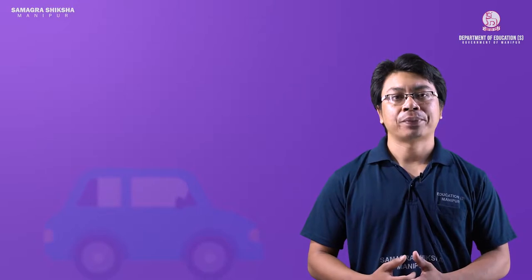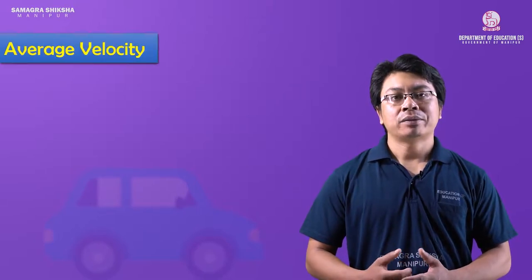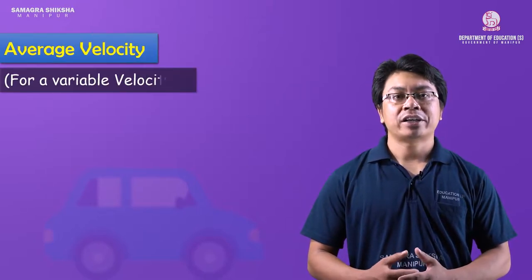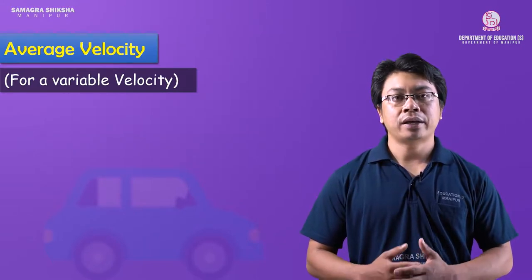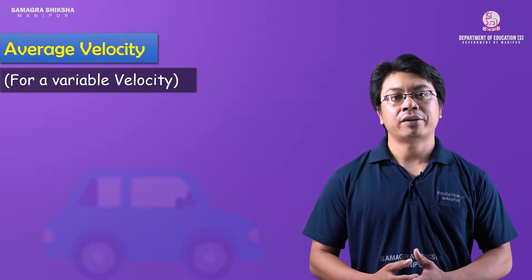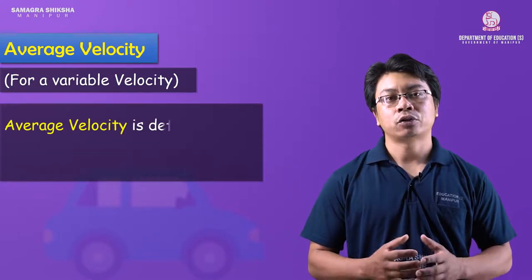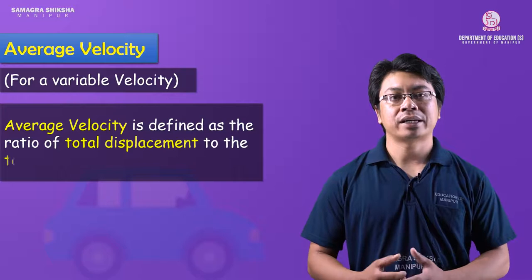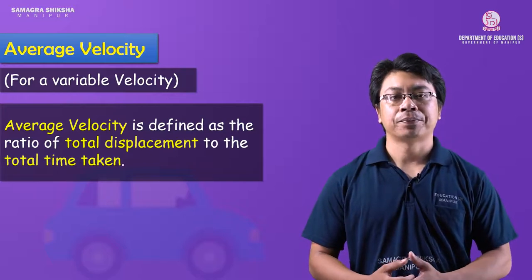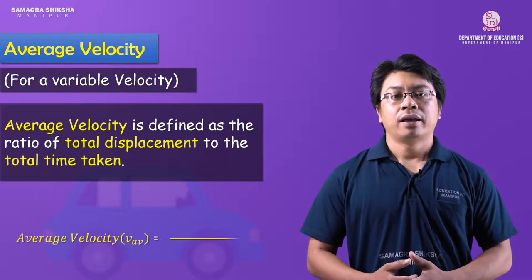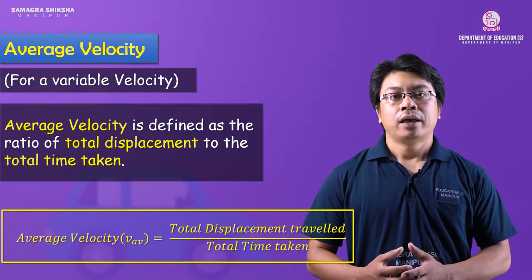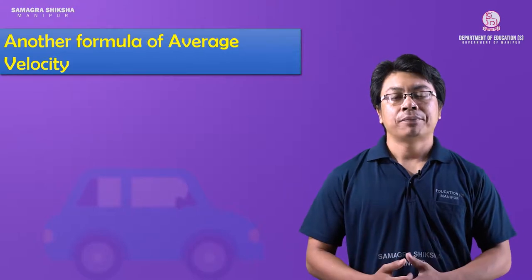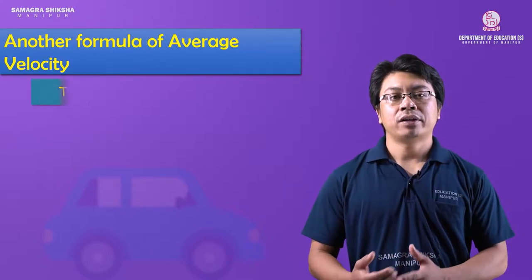For uniform and non-uniform motion with different velocities, we use average velocity. Average velocity is defined as the ratio of total displacement to total time taken.